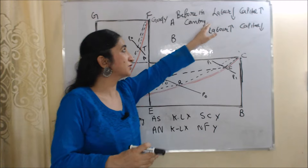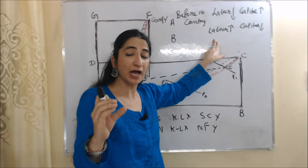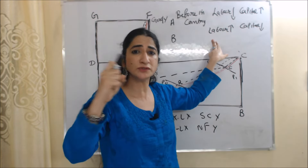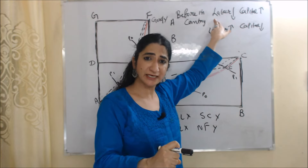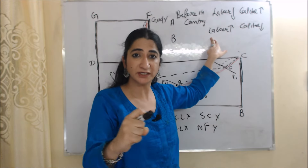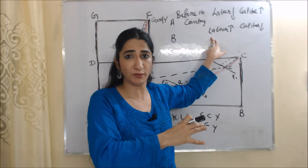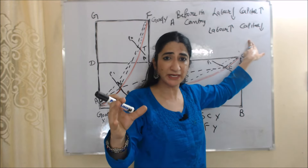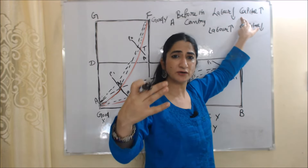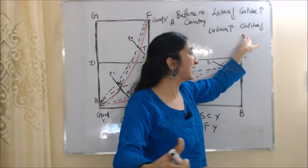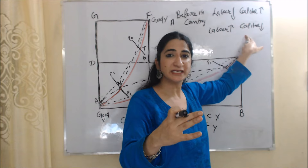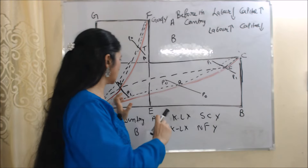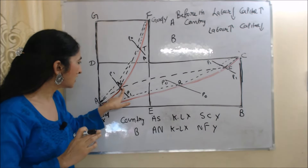So here we see: before trade, price of labor is low in country A but very high in country B. After trade, country A increases the demand for labor but country B reduces the demand for labor. As a result, wage rate increases in country A but falls in country B — after a certain time period they become equal in both countries. Similarly, before trade price of capital is very high in country A but very low in country B. After trade, country A reduces the demand for capital but country B increases it. As a result, interest rate falls in country A but increases in country B, and after a certain time period interest rate becomes equal in both countries.